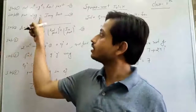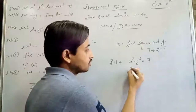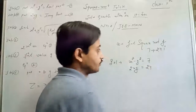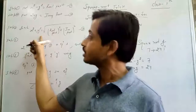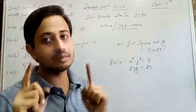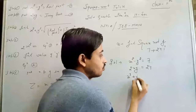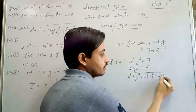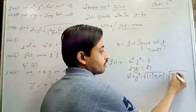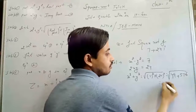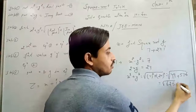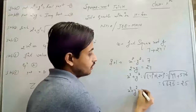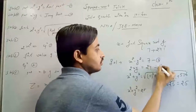Second step: 2XY equals the imaginary part, which is 24. Third step: find X² plus Y², which is the square root of (real part² plus imaginary part²). So X² plus Y² equals √(7² + 24²). 7² is 49 and 24² is 576, giving us 625. The square root of 625 is 25. So X² plus Y² equals 25. This is equation 3.